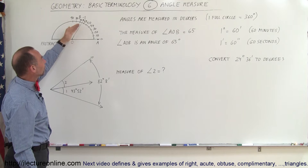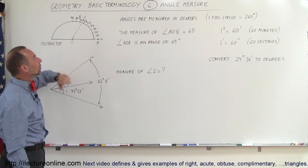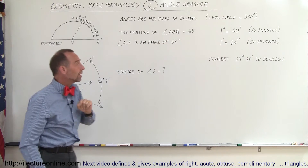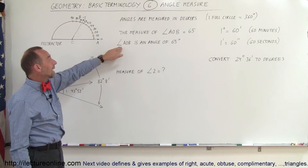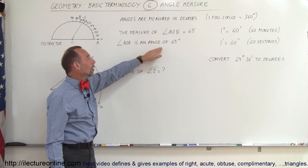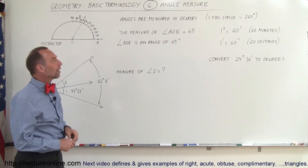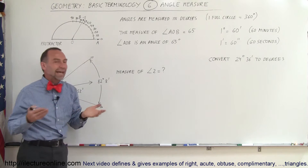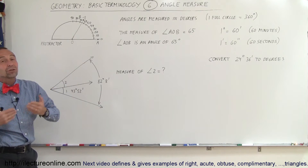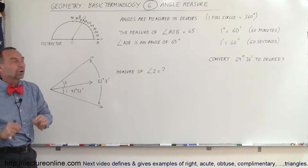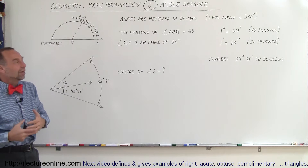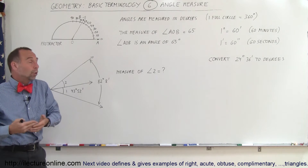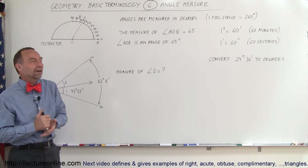We can see that this starts at 0 degrees and goes to 65 degrees, so the span is 65 degrees. We can say the measure of angle AOB is 65 degrees, or the angle AOB is an angle of 65 degrees. There's no degree symbol required when writing the measure of an angle, but I prefer to include degrees to be more clear — so the measure of AOB is 65 degrees.